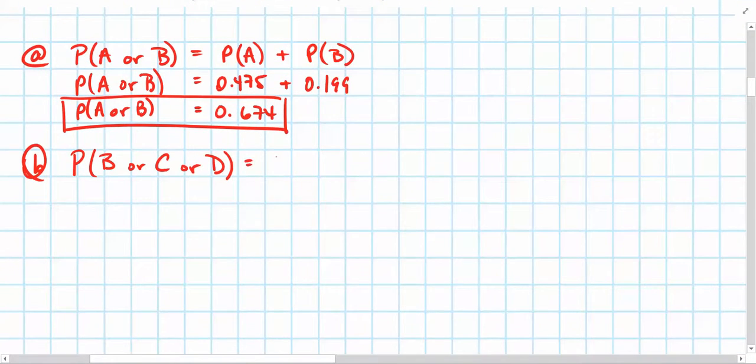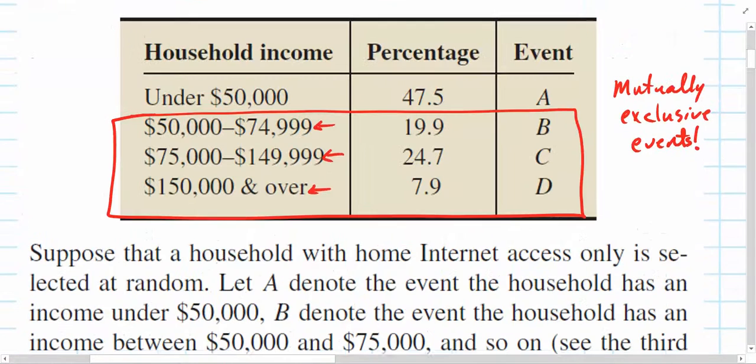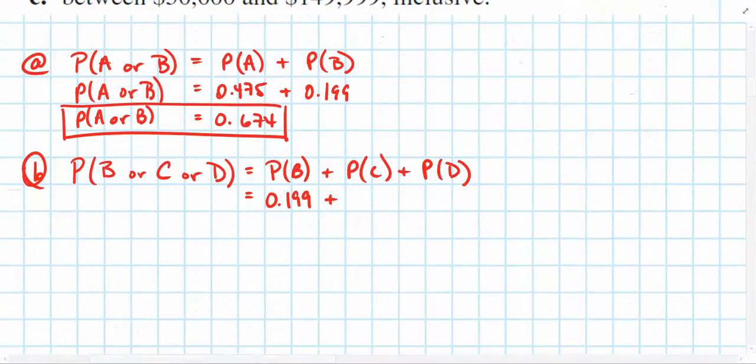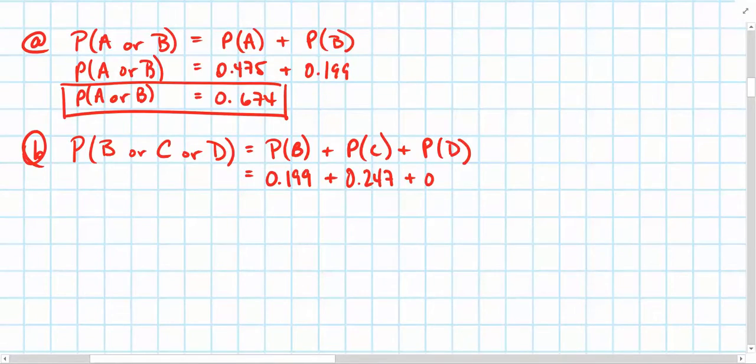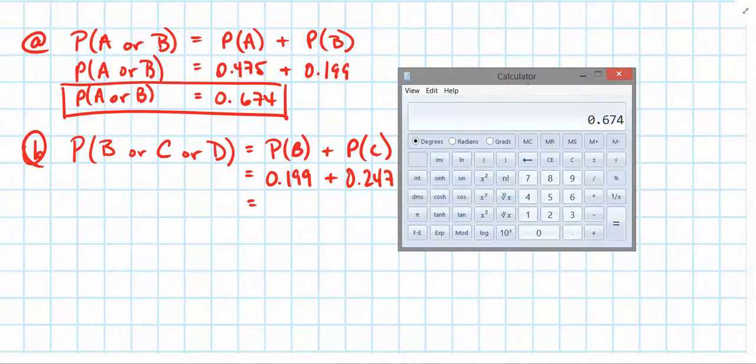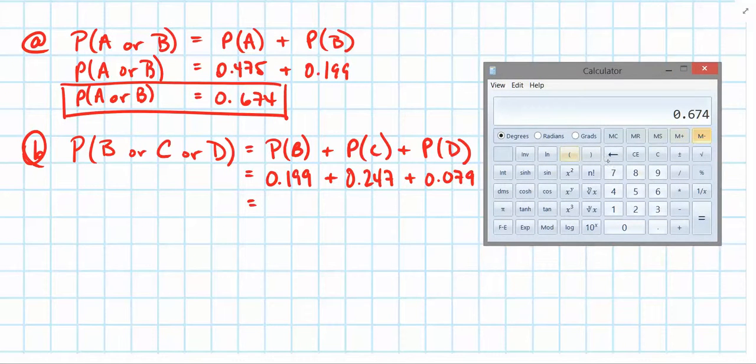Since these are mutually exclusive, we can simply add them together. Probability of B, plus the probability of C, plus the probability of D. So, the probability of B, well we know that from the last problem, is 0.199. The probability of C is 0.247. And the probability of D looked like it was 0.079. Be sure that you are rewriting your percentages as decimals very carefully. So, I'll bring up a calculator in view this time to complete this work. We want 0.199, plus 0.247, plus 0.079.